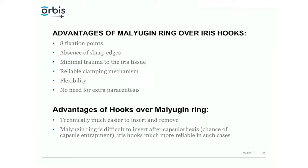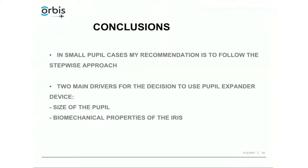Malyugin ring advantages over iris hooks: although it has four points, it effectively has eight contact points; there are no sharp edges; no trauma to iris tissue; it clamps well; there is flexibility; and no need for extra paracenteses. Iris hooks have their own advantages — they are technically much easier, most surgeons are already familiar with them, and the Malyugin ring is difficult until you get used to it, after which it is no longer an issue.